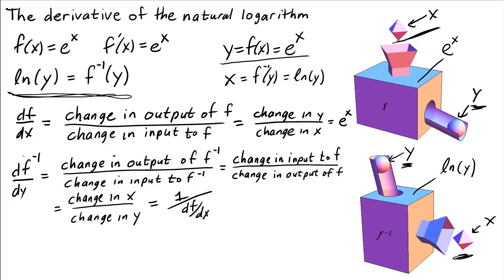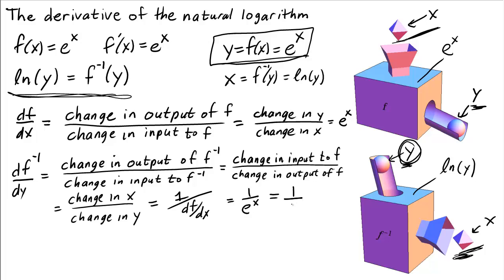So the derivative of f inverse, i.e. the derivative of the natural logarithm, should be 1 over e^x. But that doesn't quite make sense because this x represents the output of the natural logarithm. We need to write the derivative in terms of its input y. That's not so hard because we know that e^x is the same thing as y, so 1 over e^x is 1 over y. And that is the derivative of the natural logarithm: d/dy of ln(y) is equal to 1 over y.